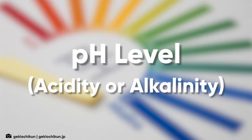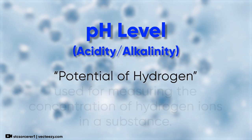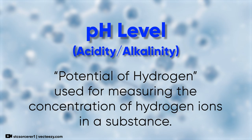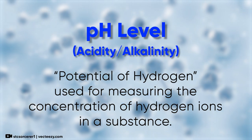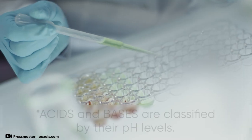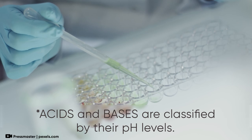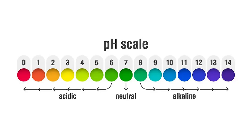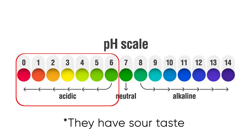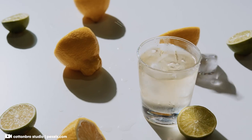Acidity or alkalinity? pH stands for potential of hydrogen, and it is used for the effective measurement of the concentration of hydrogen ions in a substance. Acids and bases are classified by their pH levels. If a substance has a pH level below 7, it is considered acidic — like lemon juice or vinegar.